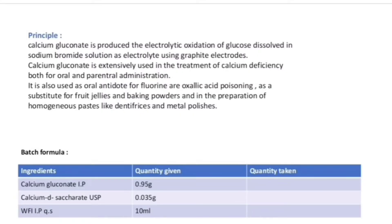Principle: Calcium gluconate causes the electrolytic oxidation of glucose dissolved in sodium bromide solution as electrolyte using graphite electrodes. Calcium gluconate is extensively used in the treatment of calcium deficiency both for oral and parenteral administration. It is also used as an oral antidote for fluorine in oxalic acid poisoning, as a substitute for fruit jellies and baking powders, and in the preparation of homogenous paste-like dentifrices and metal polishes.